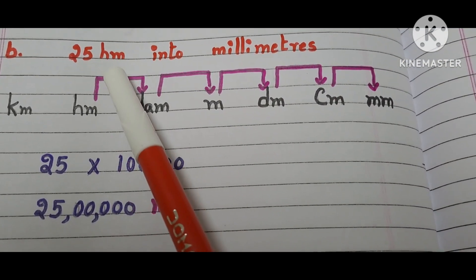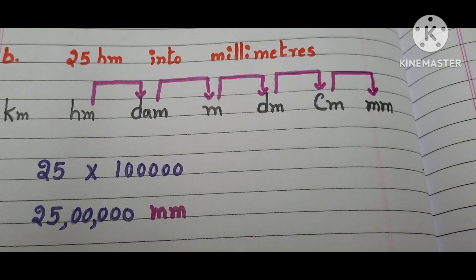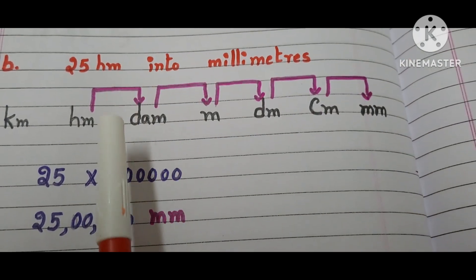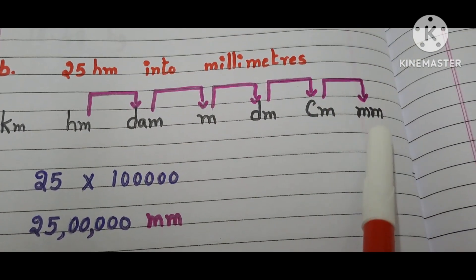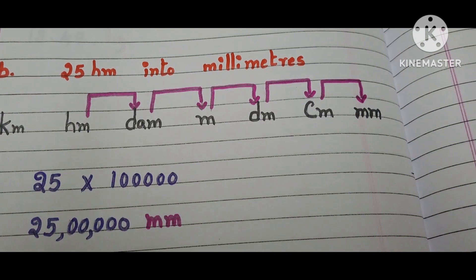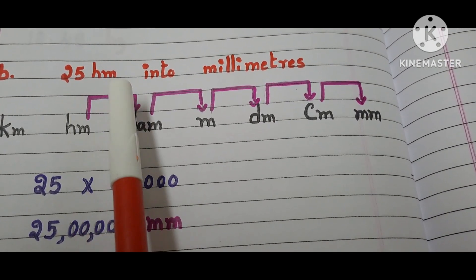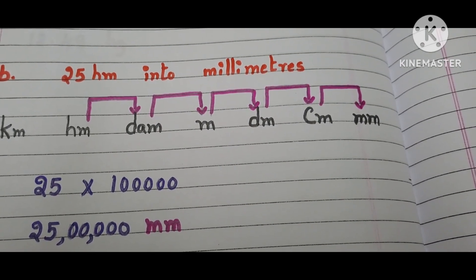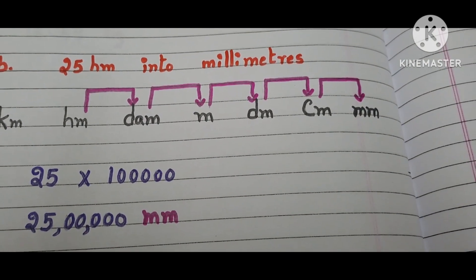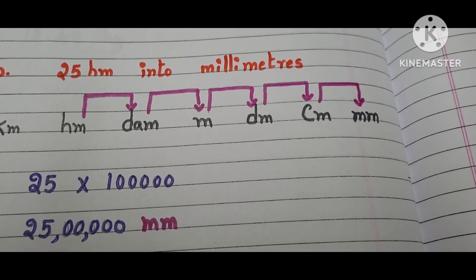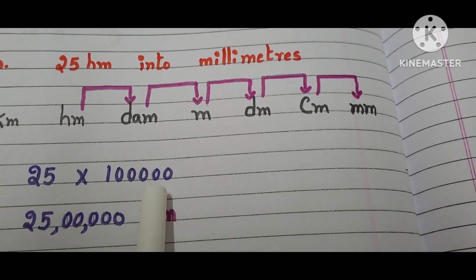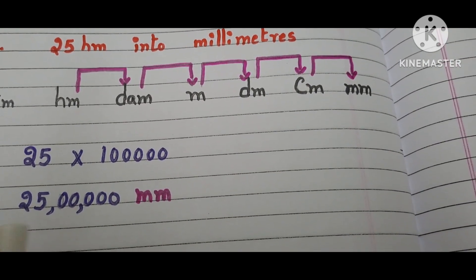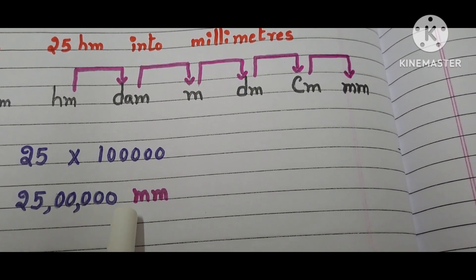Part (b) is 25 hectometers into millimeters. The question is given in hectometers and we have to convert them into millimeters. Where are hectometers in the table? Here it is. Where are millimeters? Here it is. We are moving 5 steps from left side to right side in the table, so we multiply 25 by 1 lakh. 25 times 1 lakh equals 25 lakhs. The answer is 25 lakhs millimeters.